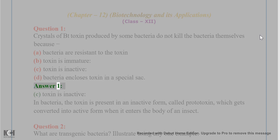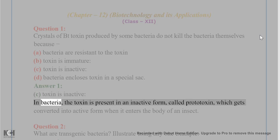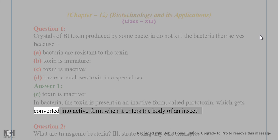Answer 1. C. Toxin is inactive. In bacteria, the toxin is present in an inactive form called prototoxin, which gets converted into active form when it enters the body of an insect.